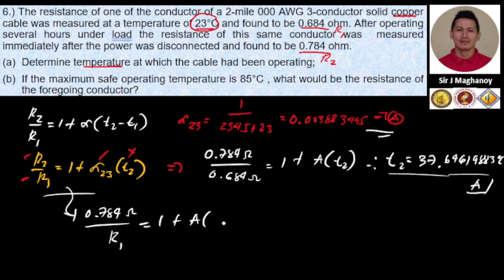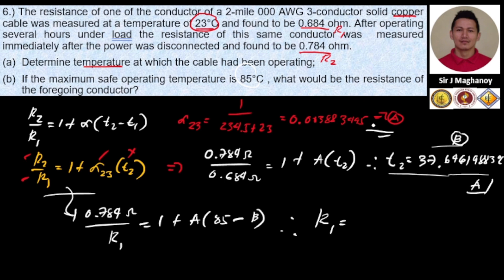The change in temperature is 85 degrees Celsius minus the operating temperature from part A. We save the operating temperature to a stored value and substitute into the formula, solving for the resistance at the maximum safe operating temperature of 85 degrees Celsius.